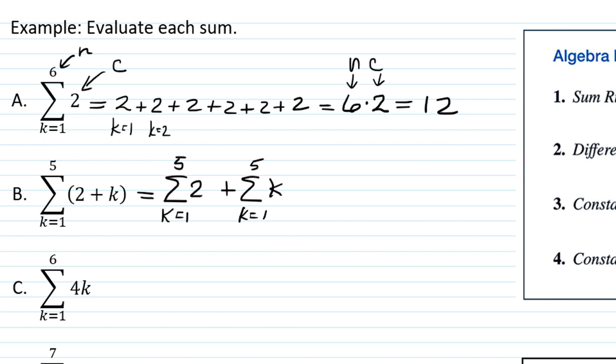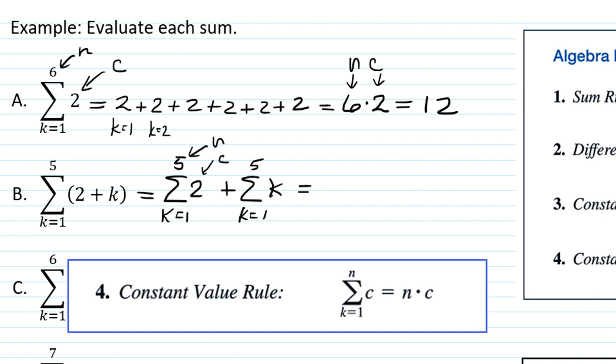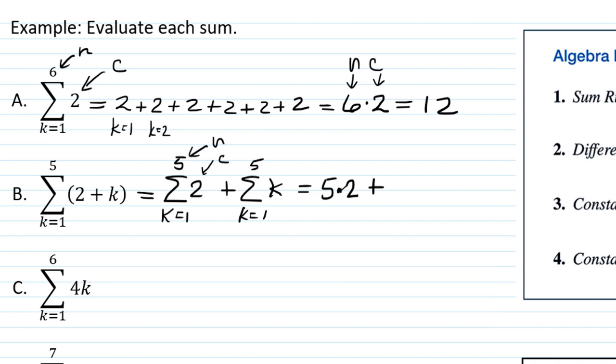So we have the sum k equals 1 to 5 of 2, and the sum k equals 1 to 5 of k. Well, as we just saw, when you're adding up a constant, you can just multiply n times c. So we're going to have 5 times 2 for that summation.